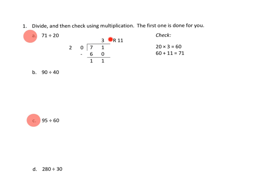So they would say that our quotient is three with a remainder of 11. And then it looks like they checked their work, which is a really handy thing we can do about division. They multiplied their quotient times the divisor, so three times 20 is 60, and then they added in the remainder.